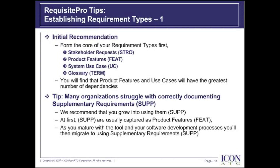Establishing requirement types. So what is a requirement type? A requirement type serves as a template for all requirements of the same form and is useful for classifying or grouping similar requirements in a project, and each requirement type has a unique set of user-defined attributes. The first thing a product team or software engineering process group should do is agree upon the requirement types — asking: what are the requirement types, how many will we need, and what criteria will distinguish one from another?